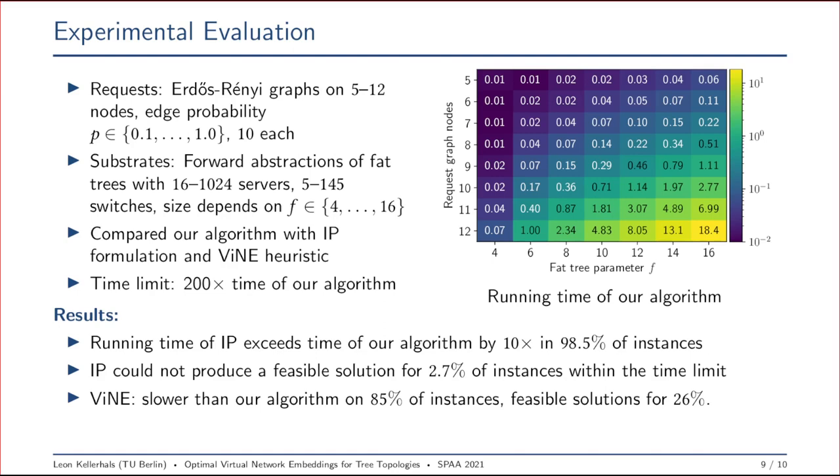Lastly, if we take a close look at the few feasible solutions where VINE was faster than our algorithm, we can see that VINE produced a factor of 3.6 approximation and it took roughly half of the time for the solution to be produced.